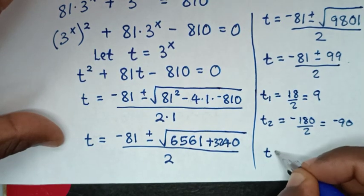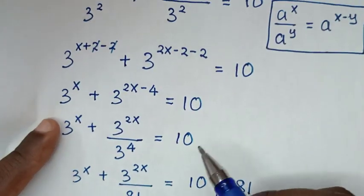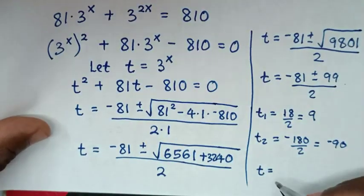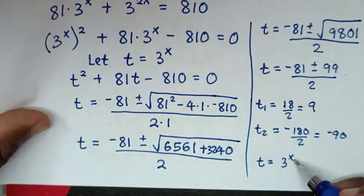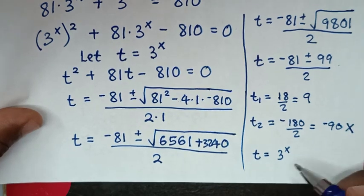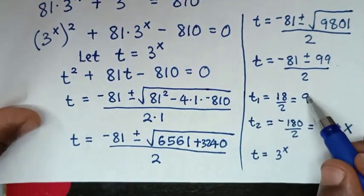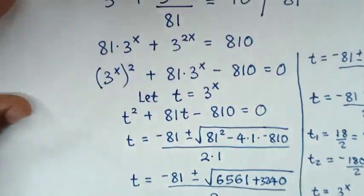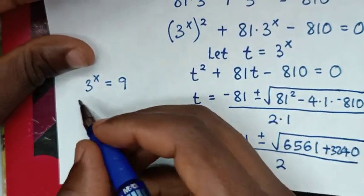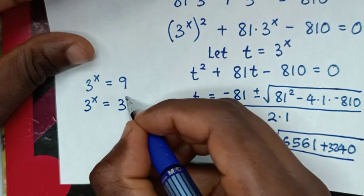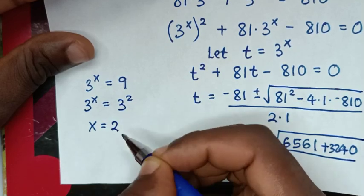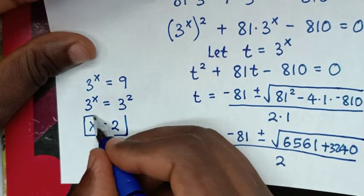But before, we let t equal to 3 power of x. Since 3 power of any number is always a positive value, and negative 90 is negative, the second value of t is rejected. We deal with the first value, t equals 9. So 3 power of x is equal to 9, which is 3 squared. Since we have the same base, we compare the powers, so x is equal to 2. This is the final answer.